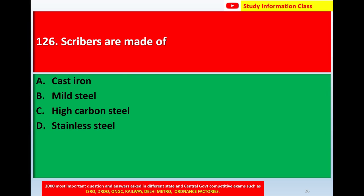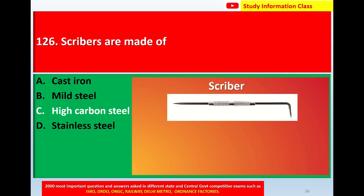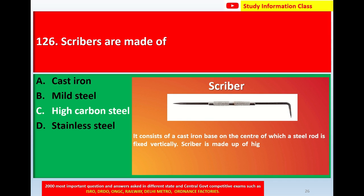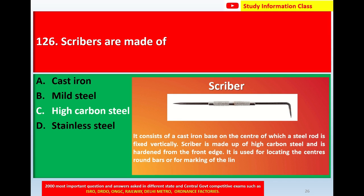Question number 126: Scribers are made up of — Option A: Cast iron, Option B: Mild steel, Option C: High carbon steel, Option D: Stainless steel. This is the diagram of a scriber. It consists of a cast iron base at the center of which a steel rod is fixed vertically. The scriber is made of high carbon steel and is hardened at the front edge, used for locating centers of round bars or marking lines. The correct answer is Option C: High carbon steel.